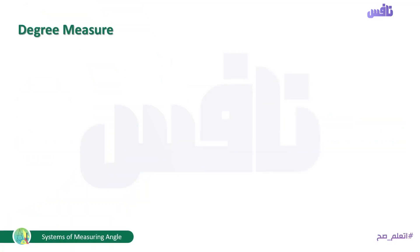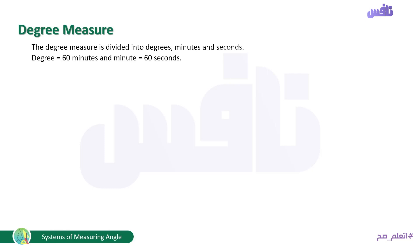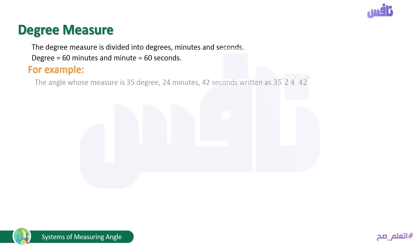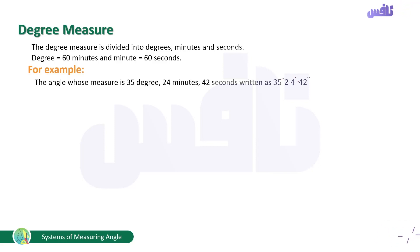What about the degree measure? The degree measure is divided into degrees, minutes, and seconds — we all know this from the prep stage. We know that one degree equals 60 minutes and one minute equals 60 seconds. For example, if I have an angle whose measure is 35 degrees, 24 minutes, 42 seconds, we write it mathematically as 35° 24′ 42″.